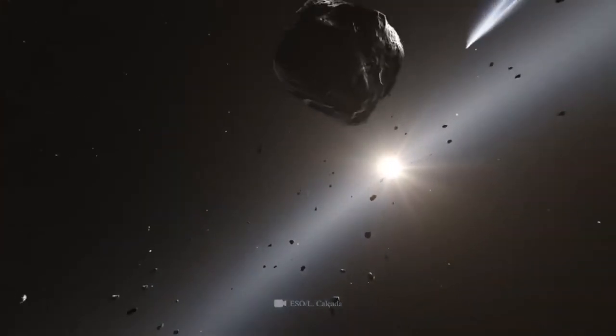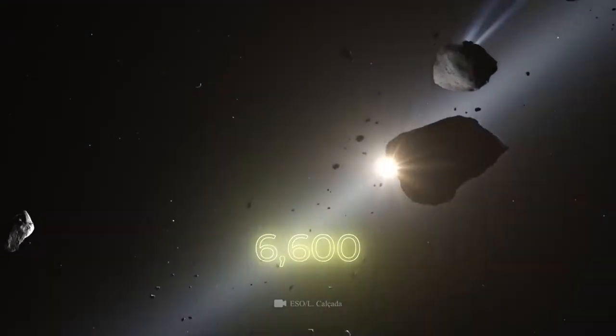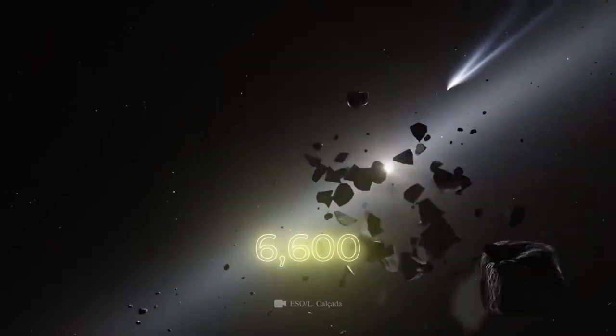And this is just the tip of the iceberg. After all, the solar system has 6,600 comets, and the slightest external influence can seriously change their trajectory.